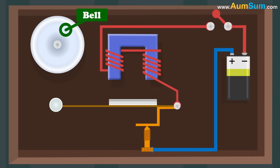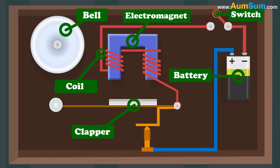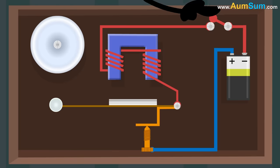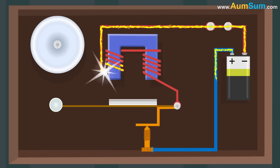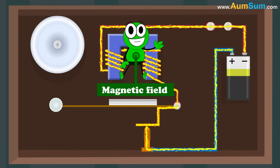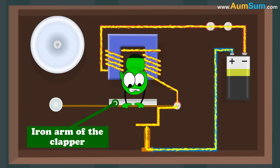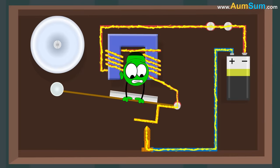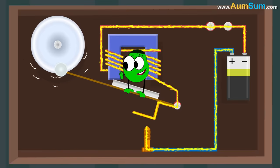An electric bell consists of a bell, an electromagnet, switch, battery, clapper and a coil. When the switch is closed and electric current passes from the battery to the electromagnet, this leads to the creation of a magnetic field. This magnetic field attracts the iron arm of the clapper. As a result, the metal ball strikes and we hear a sound.